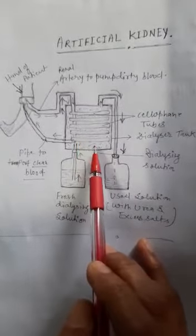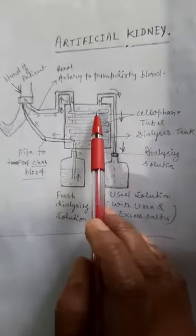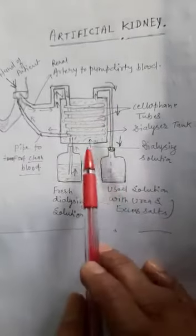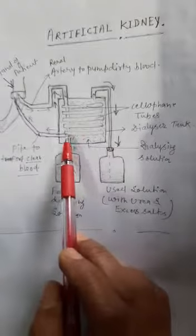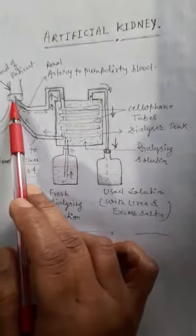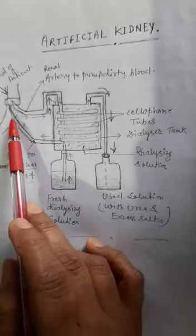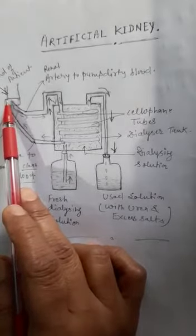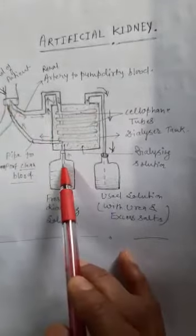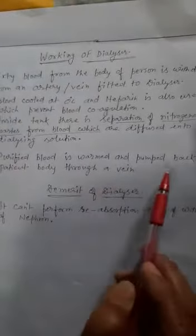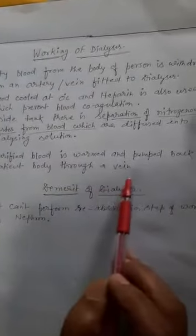After filtration, the waste products along with the dialysing solution are transferred into another bottle. When the blood is cleaned, the clean blood is transferred into the patient's body by the help of an artificial pipe connected with the renal vein. Purified blood is warmed and pumped back into the patient's body through a vein.